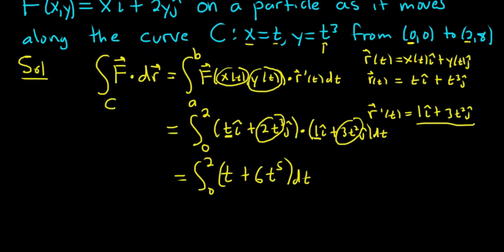Good stuff. All right. Now all we do is integrate with respect to t. So this is going to be t squared over 2, using the power rule, plus 6t to the sixth over 6. But the 6 is canceled. So you just get t to the sixth. And you're going from 0 to 2.